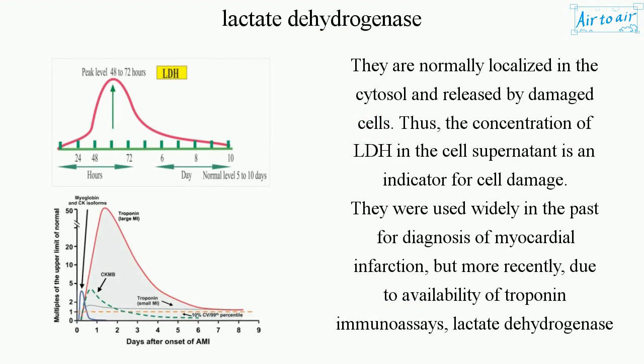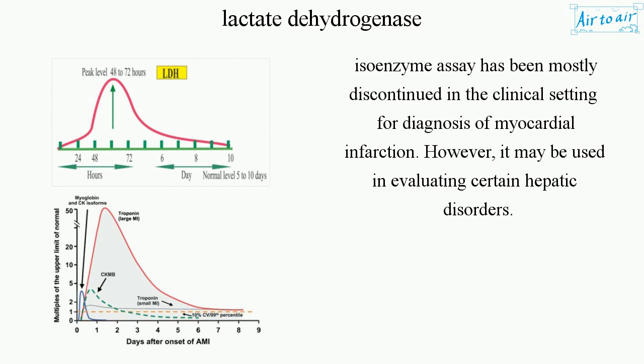LDH isoenzymes are normally localized in the cytosol and released by damaged cells. Thus, the concentration of LDH in the cell supernatant is an indicator for cell damage. They were used widely in the past for diagnosis of myocardial infarction, but more recently, due to availability of troponin immunoassays, the lactate dehydrogenase isoenzyme assay has been mostly discontinued in the clinical setting. However, it may still be used in evaluating certain hepatic disorders.